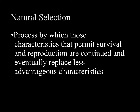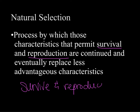Charles Darwin only used the term natural selection on one of the very last pages of On the Origin of Species. Natural selection is the process by which those characteristics that permit survival and reproduction are continued and eventually replace less advantageous characteristics. Pretty much every day when we're talking about evolution, you are going to hear the words survive and reproduce. Natural selection is the process by which things that help individuals survive and reproduce become more common within that population, changing the gene pool so that those alleles that allow for survival and reproduction become more common.